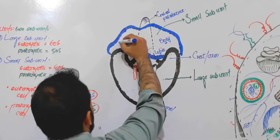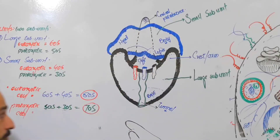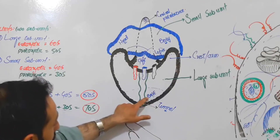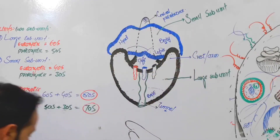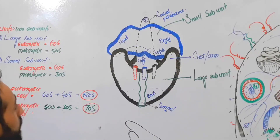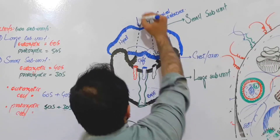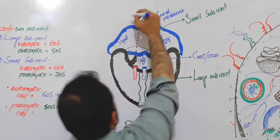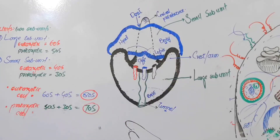The eighth part of the ribosome is called the head of the ribosome. Then there is a very important area where the small sub-unit goes slightly downward — this area is called the dent of the ribosome.